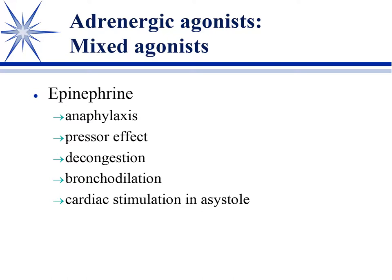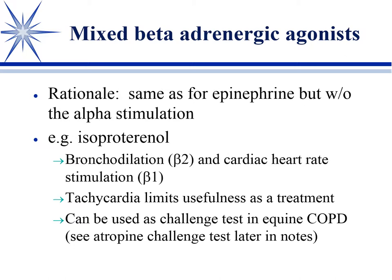There are mixed beta adrenergic agents with no alpha effect but beta-1 and beta-2 activity. Isoproterenol - isuprel - is the prototype here. It's bronchodilatory but stimulates heart rate, and this tachycardia limits its usefulness from a treatment standpoint. It can be used as a challenge test in equine COPD, which I'll explain further with another challenge test using atropine.